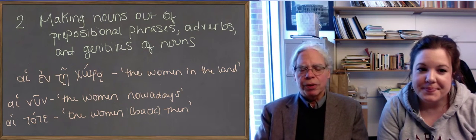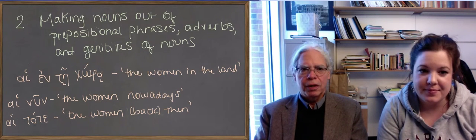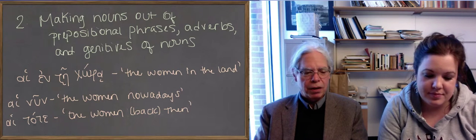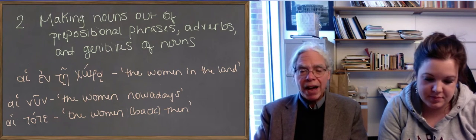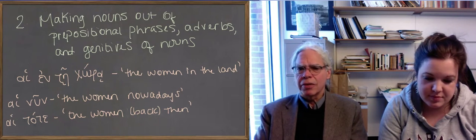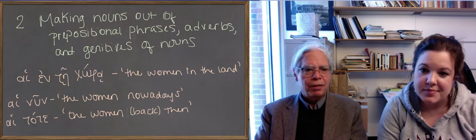All right, here's the second thing that you can do with the definite article. You can make nouns not just out of adjectives, but out of prepositional phrases, adverbs, and nouns in the genitive case. These are things that we don't do.